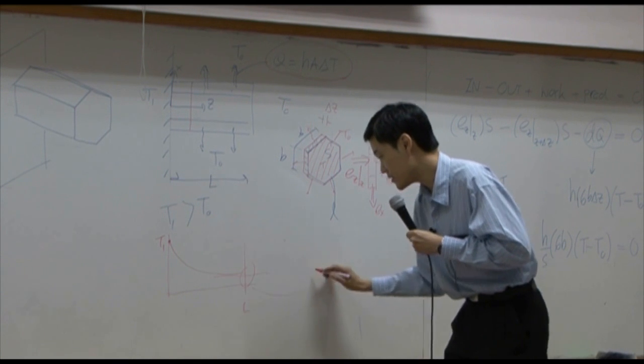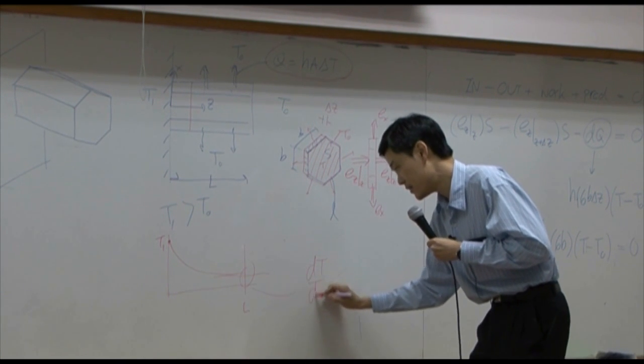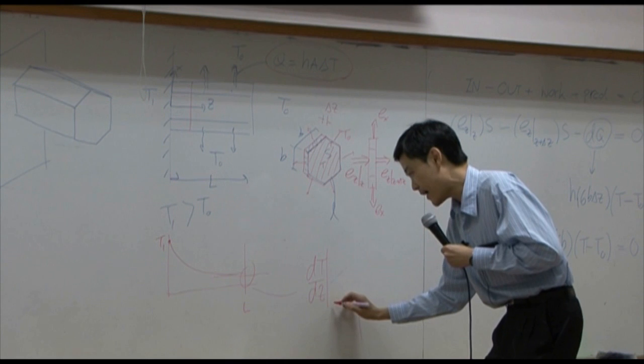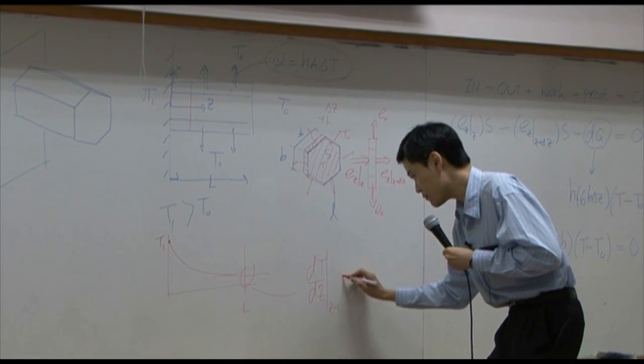In that case, you can take dT by dZ at Z equal to L to be zero.